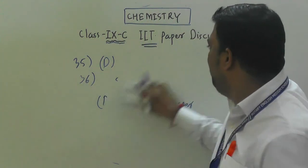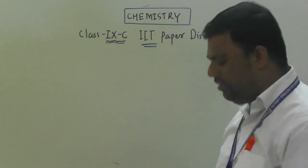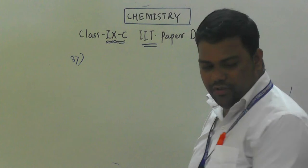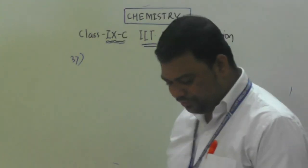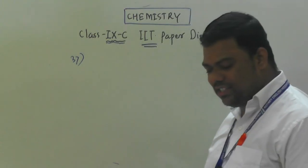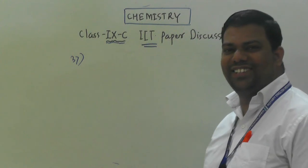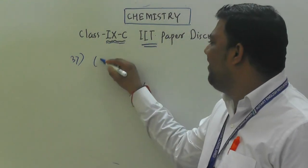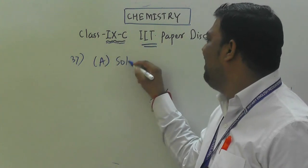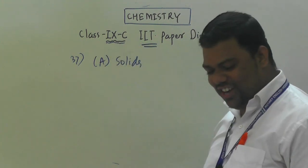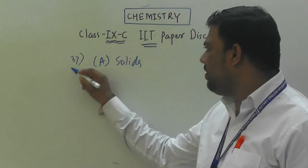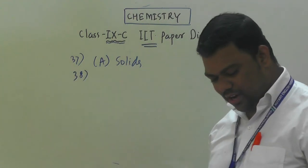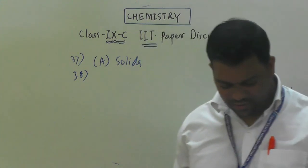Question number 37: which has the least energetic molecules? The answer is solid, option A. You should have gotten this answer in a fraction of a second.